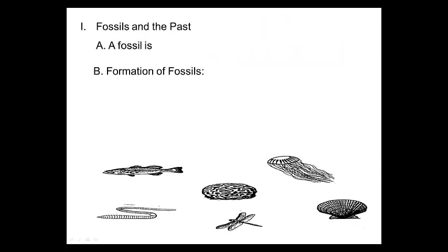So let's get started. First page: Fossils and the past. A fossil is the remains or evidence of a living thing. Pause if you need to if I go a little bit too fast so you can fill it in. Anytime there's a remain of something that was once alive, we call it a fossil.